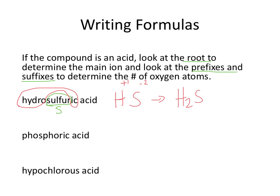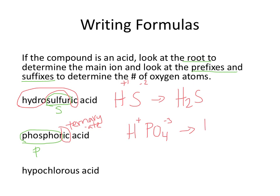My next acid has the root phosphor, which comes from phosphorus, and the suffix -ic, which tells me that it is ternary based on the -ate ion. Phosphoric acid is going to start with hydrogen, which is plus 1, and phosphate, PO₄ minus 3. So I'm going to need three of those hydrogens to cancel out the phosphate, giving H₃PO₄.